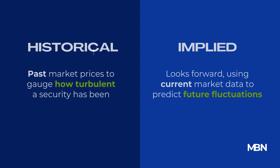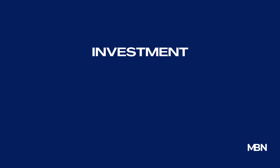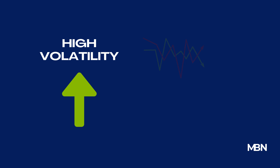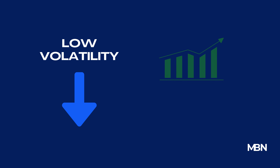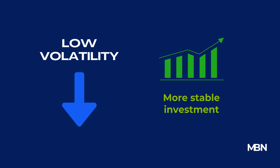What does it mean for an investment to have high or low volatility? High volatility indicates that the security's price can swing dramatically in a very short time, which could mean higher risk, but also potential for higher returns. Low volatility suggests smaller price changes, and typically points to a more stable investment.